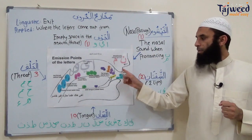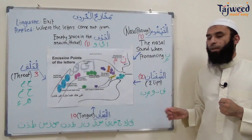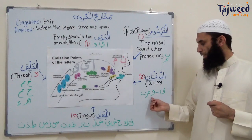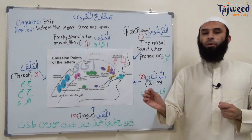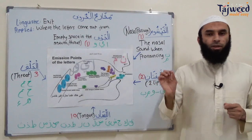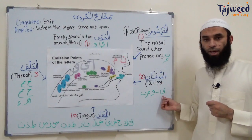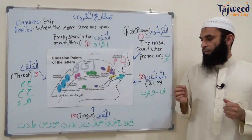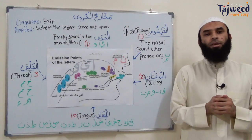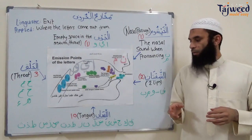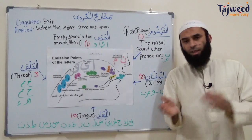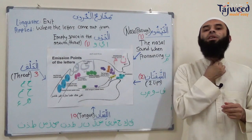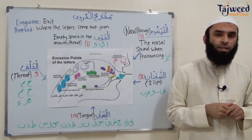Then we have الشَّفَتَان, the two lips — four letters and two مَخْرَج points. One مَخْرَج for فَاء, and a specific place to say وَاو، مِيم، and بَاء. These three share one point; فَاء has its own specific point. We have اللِّسَان, the tongue — this is most of the letters, 18 letters of the Arabic alphabet. We'll find out which letters come from the back of the tongue, middle, side, and tip. We have الْحَلْق, which means the throat — three different مَخْرَج points for six different letters.